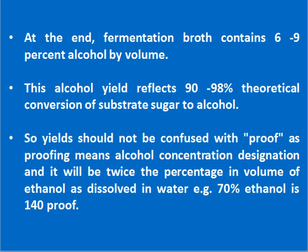At the end, fermentation broth contains 6 to 9% alcohol by volume. This alcohol yield reflects 90 to 98% theoretical conversion of substrate sugar to alcohol. Yields should not be confused with proof, as proofing means alcohol concentration designation and it will be twice the percentage by volume of ethanol dissolved in water. For example, 70% ethanol is 140 proof.